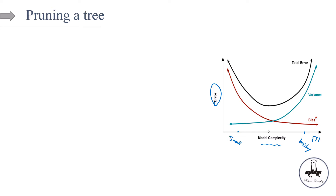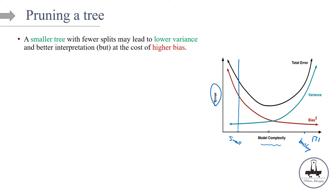Now, a smaller tree with fewer splits may lead to lower variance and better interpretation. Let's say you have a tree with only three terminal nodes — this is perfectly interpretable, really easy to interpret. But it comes at the cost of high bias, because the model is least complex and very simple, it's going to be biased. The model bias is going to be high.